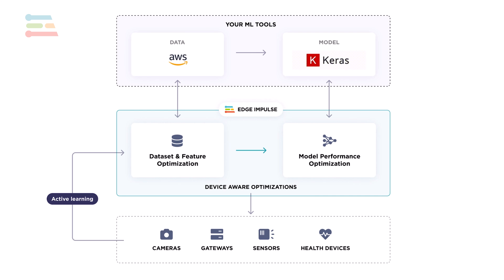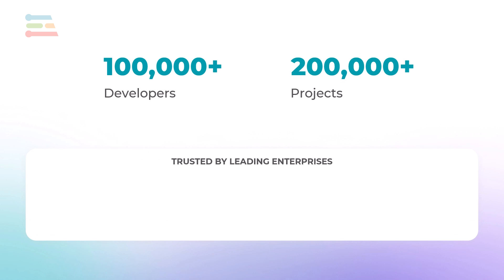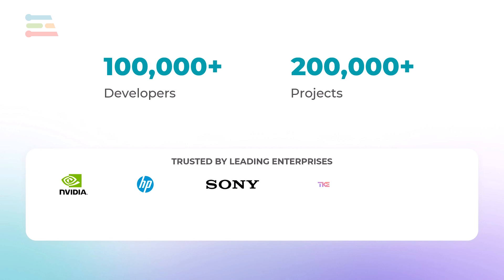Edge Impulse was founded in 2019 and has seen its community grow to over 100,000 developers with over 200,000 projects. Some of our enterprise partners and customers include NVIDIA, HP, Sony, TKE, Lexmark, Aura, Heif, Halma, Tunstall, and Nolabs. Edge AI is a fast-growing field and Edge Impulse can help you create the next big innovation. For a closer look at how edge AI is driving tangible changes, we will look at real-world case studies next.